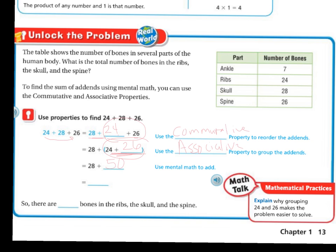I've got my two 20s making it easy for 50 and it just makes it easier now for me to add 28 and 50 which is going to give me 78. So there are 78 bones in ribs, the skull, and the spine.